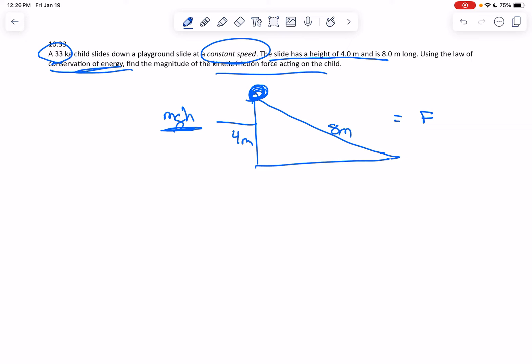We can say MGH equals force times distance, where H is 4 meters and the distance is 8 meters. So you're setting this equation equal to this equation and solving for F.